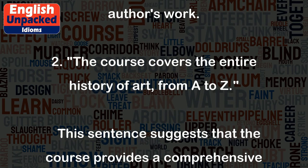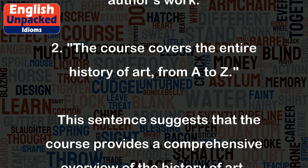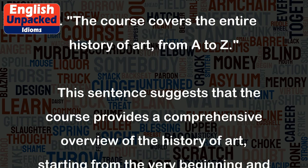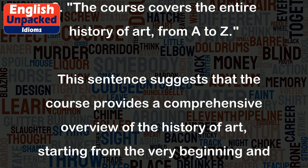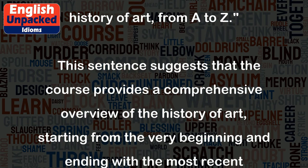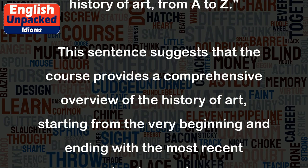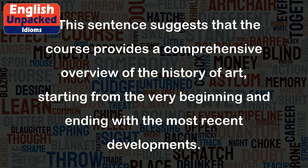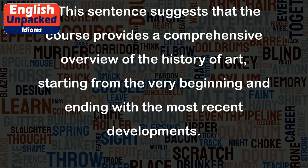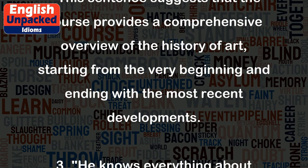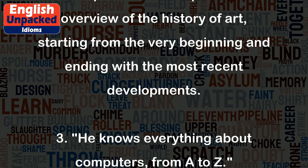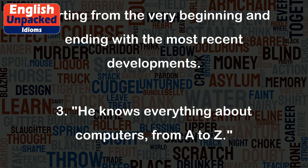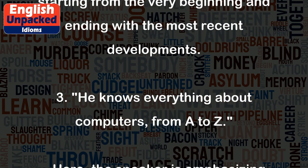Example 2: 'The course covers the entire history of art, from A to Z.' This sentence suggests that the course provides a comprehensive overview of the history of art, starting from the very beginning and ending with the most recent developments.